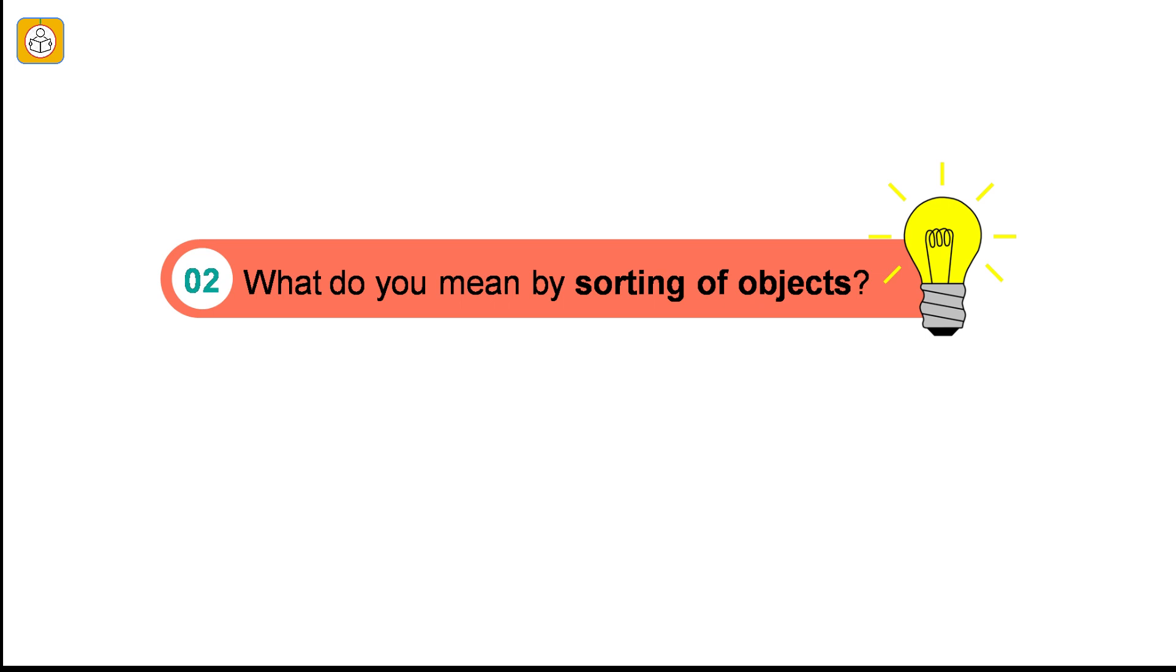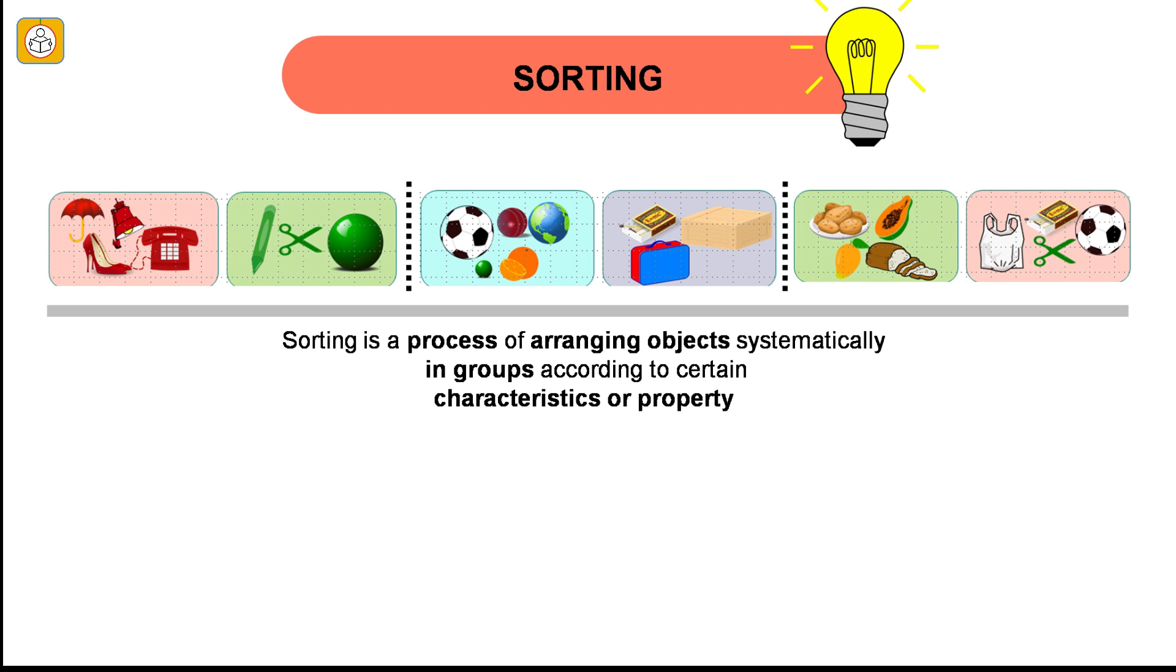Question number 2: What do you mean by sorting of objects? Sorting is a process of arranging objects systematically in groups according to certain characteristics or properties. The basis of grouping is a common characteristic, attribute or property. For example, color, shape, texture, hardness, etc.